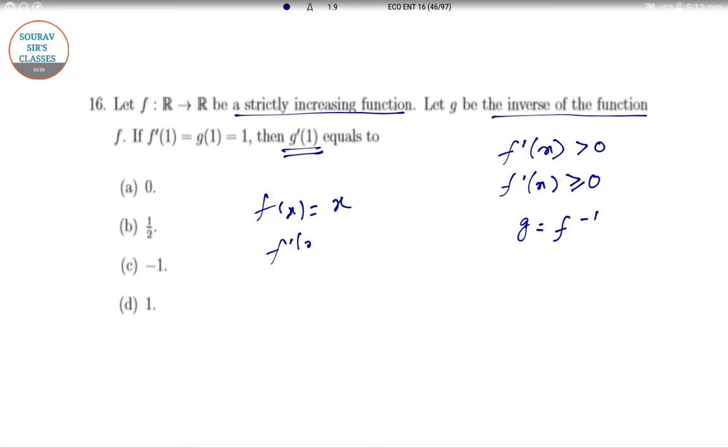F dash x equal to 1, greater than 0. So it's an increasing function. So f dash 1 is also 1. G of x equal to x, g dash x is also 1, g of 1 is also 1, and g dash x is giving you 1 as well. So keeping everything under control here, so g dash 1 will be also 1.